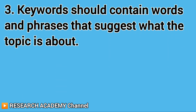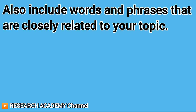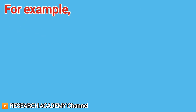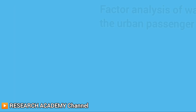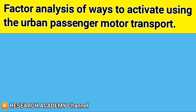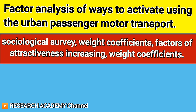Tip 3: Keywords should contain words and phrases that suggest what the topic is about. Also include words and phrases that are closely related to your topic. For example, if your paper title is 'Factor Analysis of Ways to Activate Using the Urban Passenger Motor Transport,' use keywords like: Sociological Survey, Weight Coefficience, Factors of Attractiveness Increasing, etc.